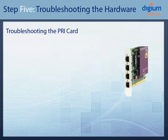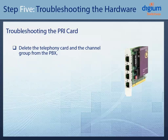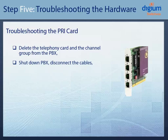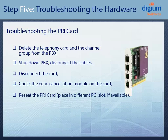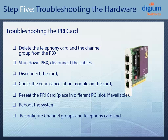We are going to do this by deleting the telephony card and the Channel Group Configuration first, shut down the PBX, then disconnect the cables and remove the PRI card. Then check the Echo Cancellation module to make sure it's secure, and re-seat the PRI card back into its original slot, or if a new PCI slot is available, insert it into the new PCI slot. Then reboot the system, reconfigure the card and the Channel Groups, and place a test call. Let's get started.